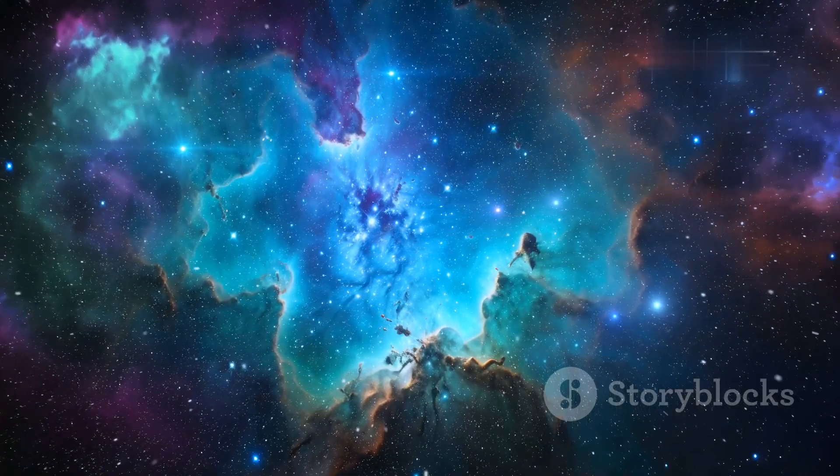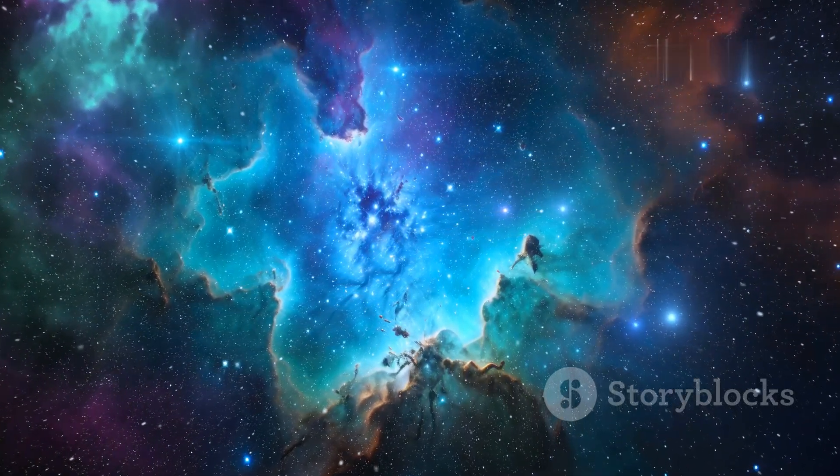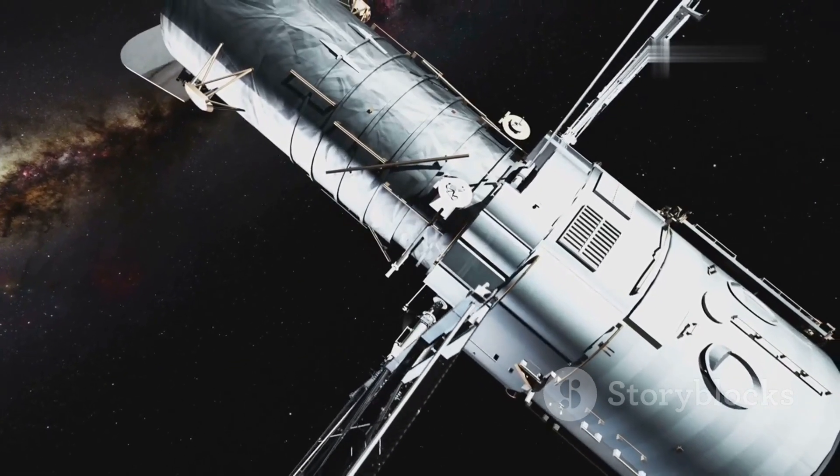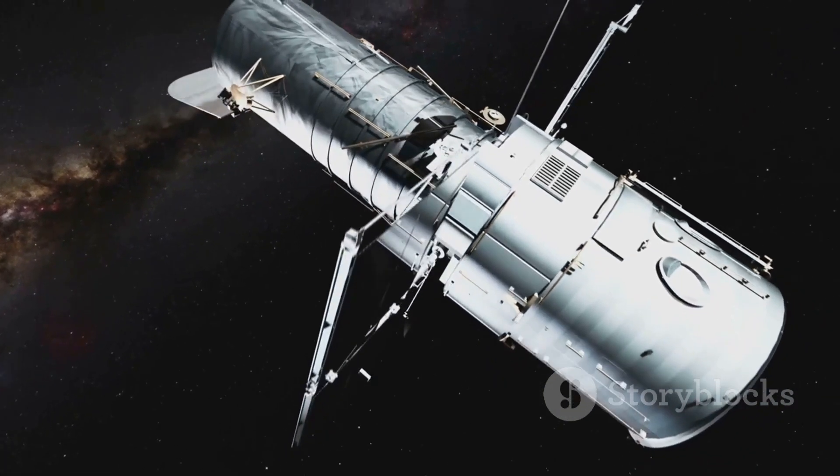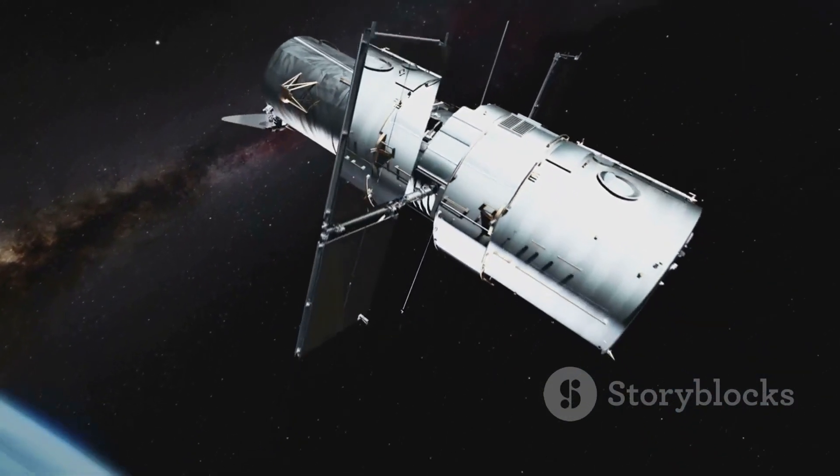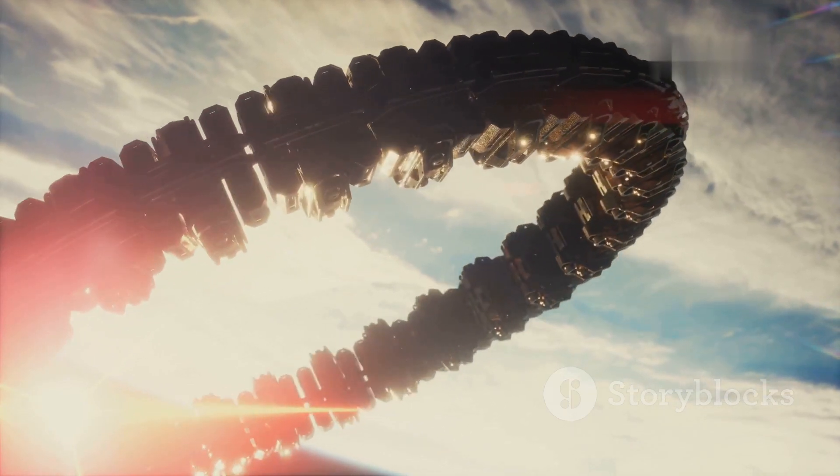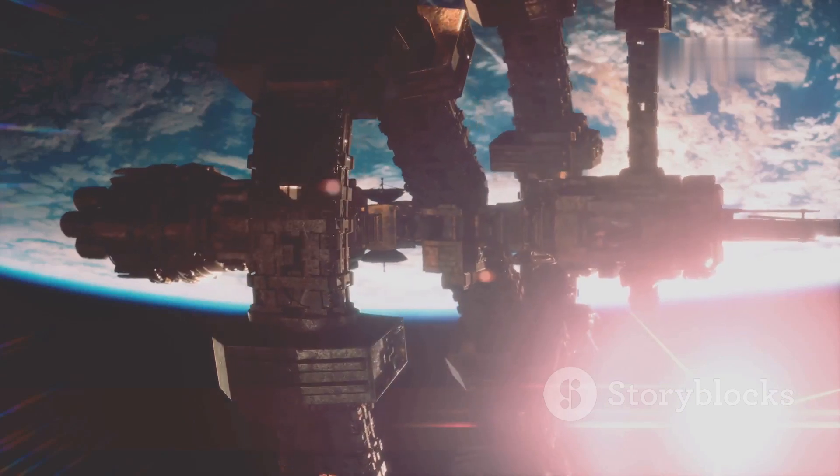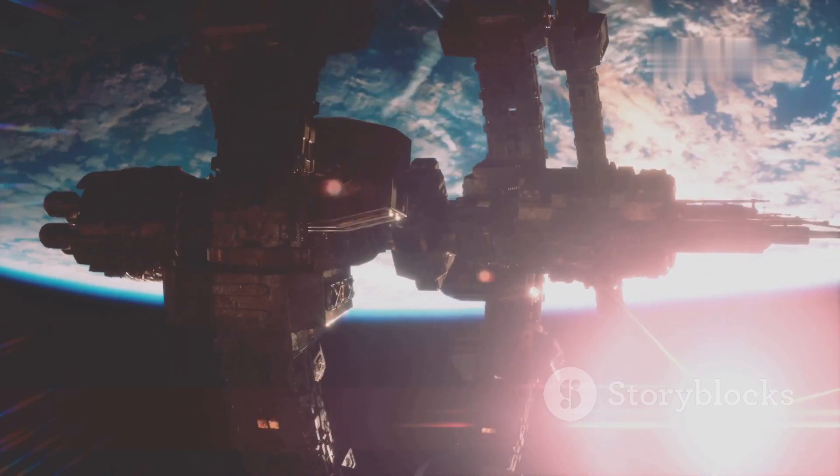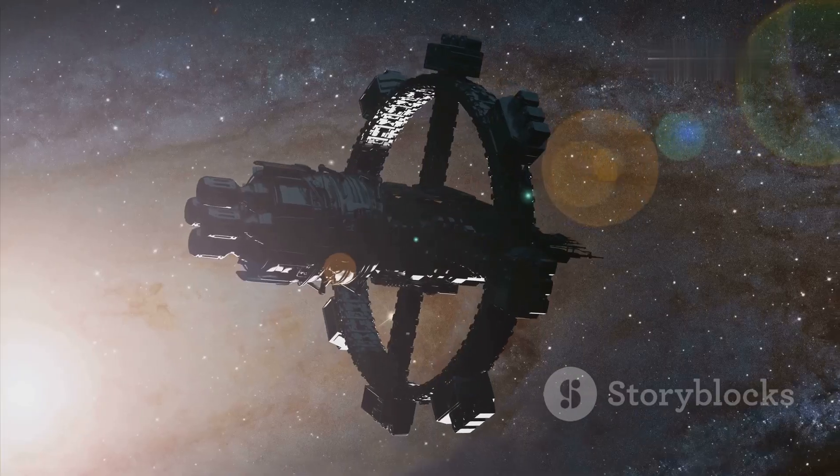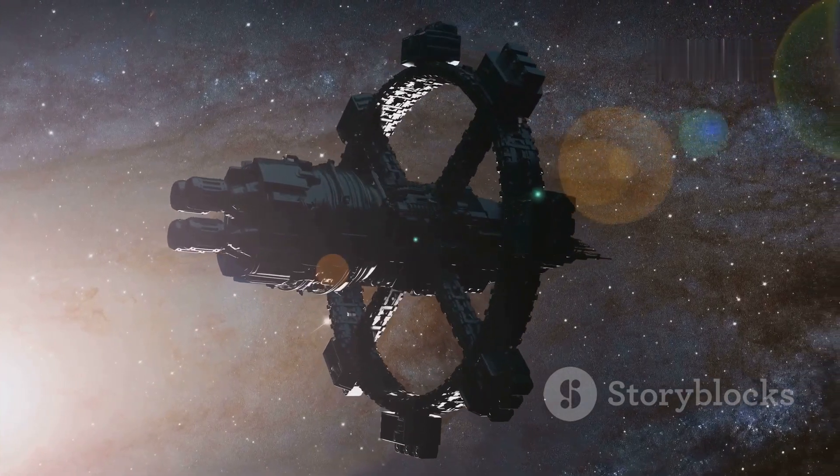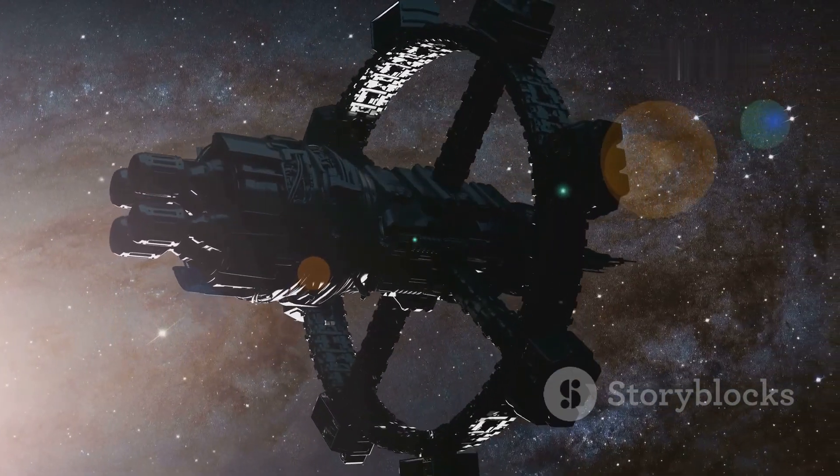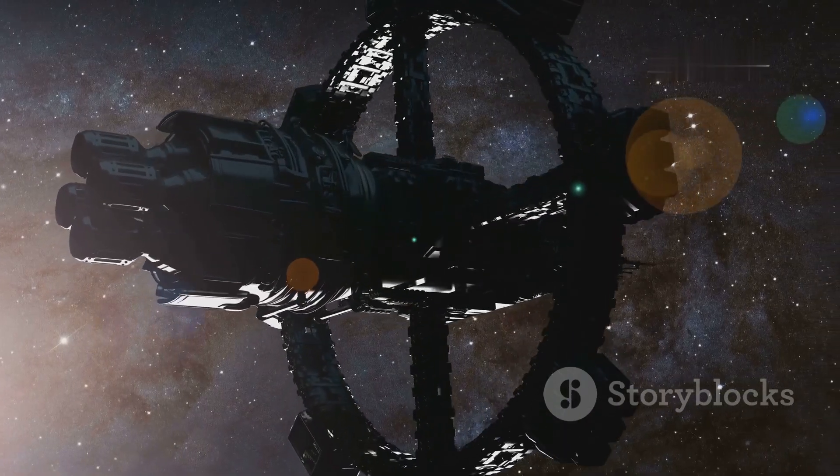Finally, we come to one of the most intriguing and terrifying possibilities, the existence of alien megastructures. James Webb is powerful enough to detect strange objects that could be evidence of advanced civilizations. Scientists have theorized that some anomalies seen in space could be megastructures, like Dyson spheres, massive constructs built by alien civilizations to harness energy from stars. While none have been confirmed, the very idea that we could soon discover something like this, an artificial structure far larger than anything we could imagine, is both thrilling and terrifying.